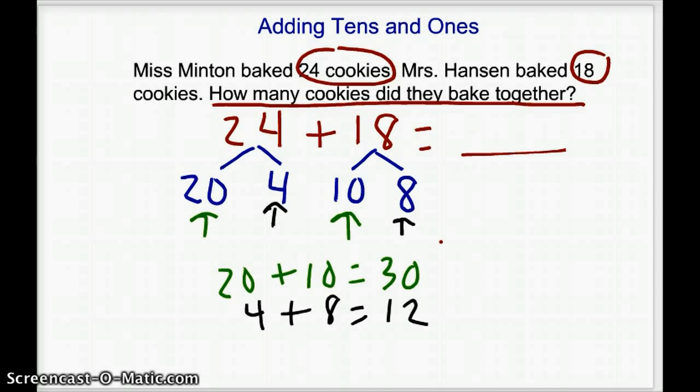Now I need to put together the 30 and the 12 to get my final sum. So 30 plus 12 equals 42.